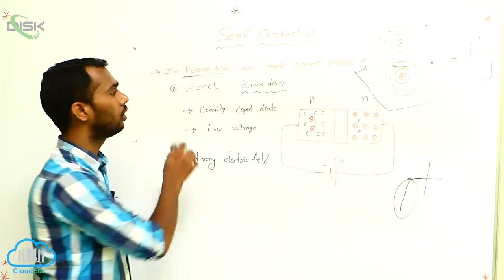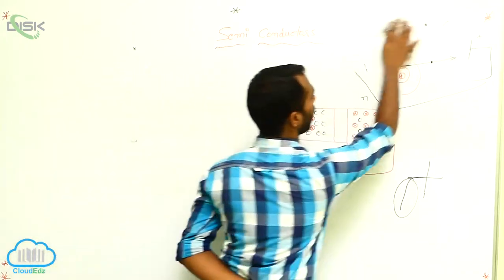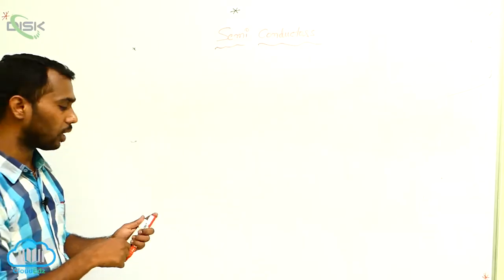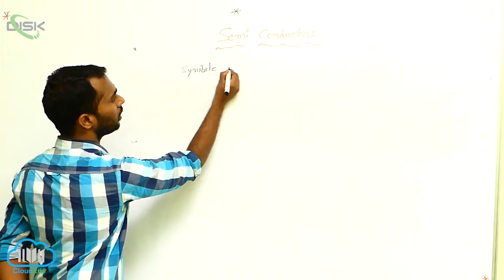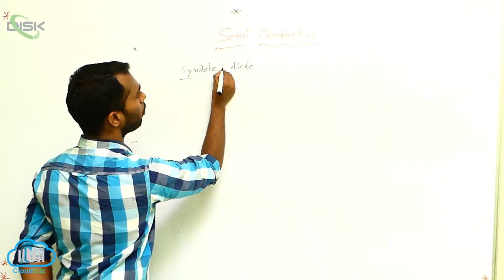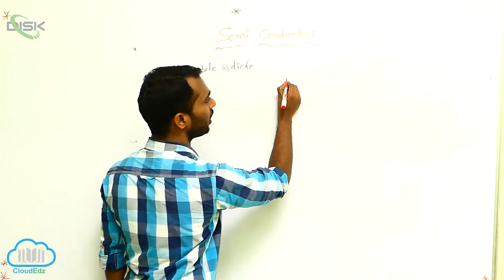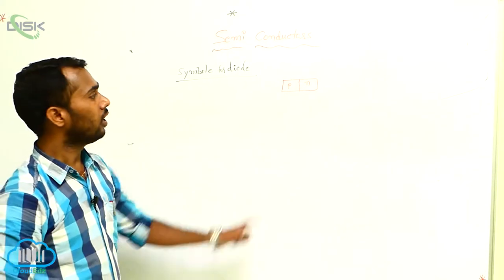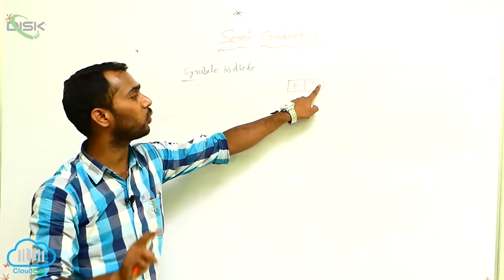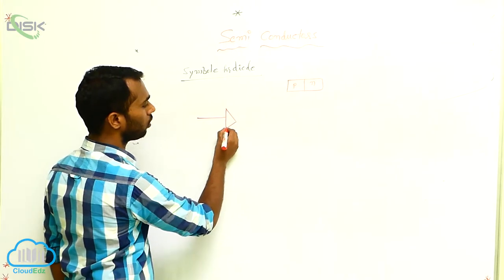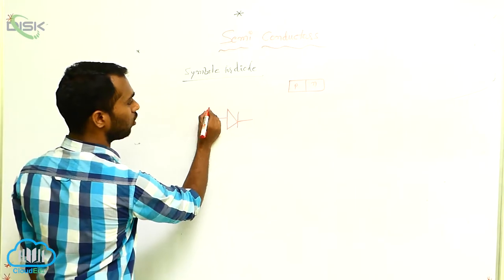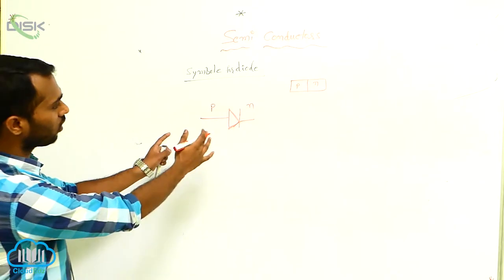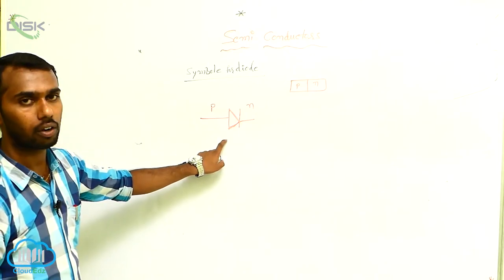Now we have to discuss the symbols — symbols of the junction diode for forward bias and reverse bias. These are very important. I am writing the symbol for a diode. For a P-N junction, take the P-type and the N-type and combine them. There are two terminals — positive and negative — that is why it is called a diode. This is the diode symbol — this part is the P-type and this part is the N-type.